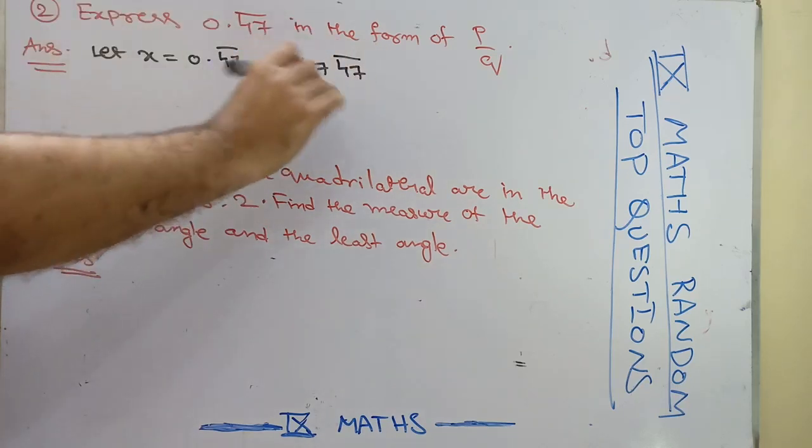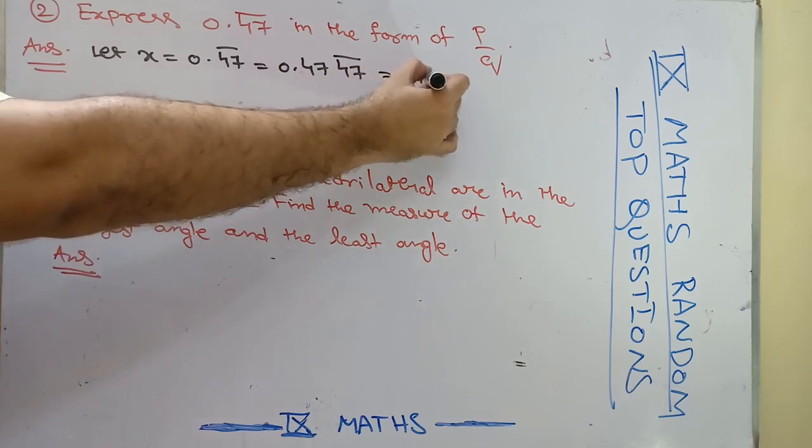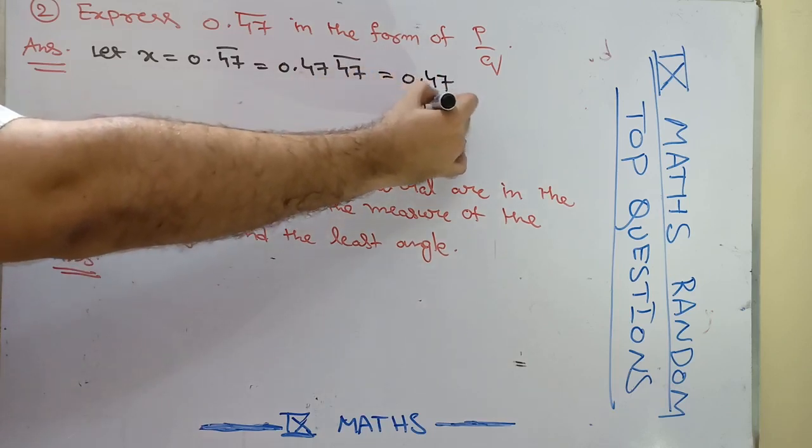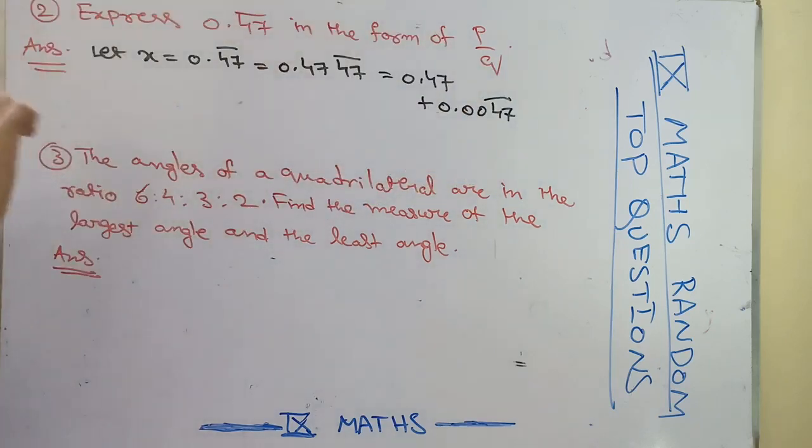Like this you can write. Later I will split this off into two pieces: 0.47 plus 0.0047 bar. Like this I can write.